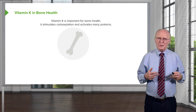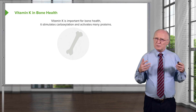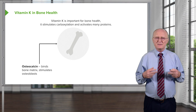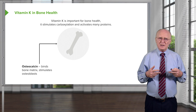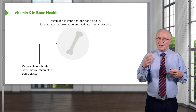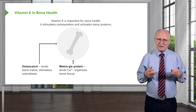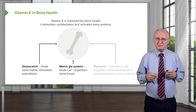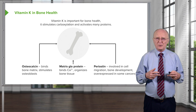Vitamin K is also important for bone health. It stimulates the carboxylation of bone proteins and activates many of them, which is important because bones are an abundant source of calcium. Three proteins that vitamin K carboxylates include: osteocalcin, which binds to the bone matrix and stimulates osteoblasts by binding calcium; the matrix GLA protein, which also binds calcium and organizes bone tissue properly; and periostin, which is involved in cell migration during bone development and may be overexpressed in some cancers.